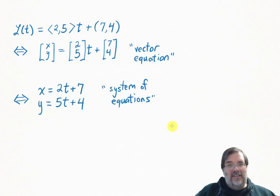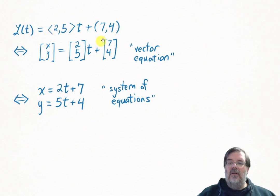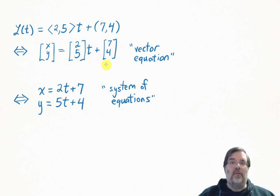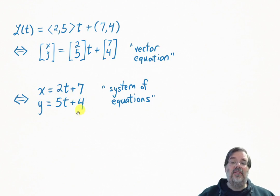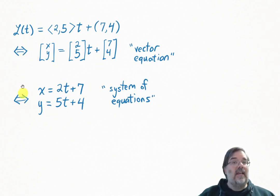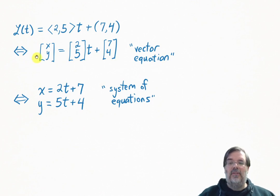For a more numeric example, let's say you have this equation of a line in two-dimensional space. To write it as our column-style vector equation, we'd write xy equals the vector ⟨2, 5⟩ times t, plus the vector ⟨7, 4⟩. That's a vector equation. That's equivalent to the system of equations: x equals 2t plus 7, and y equals 5t plus 4. Hopefully, with practice, you'll be able to look at this and understand how to write down the system of equations without writing out all the different steps.